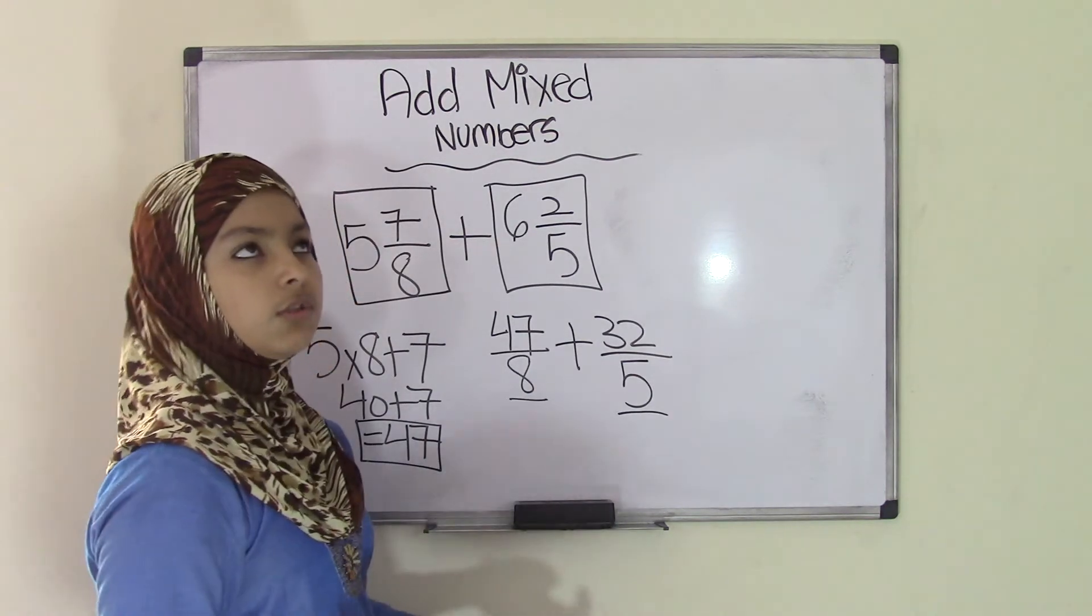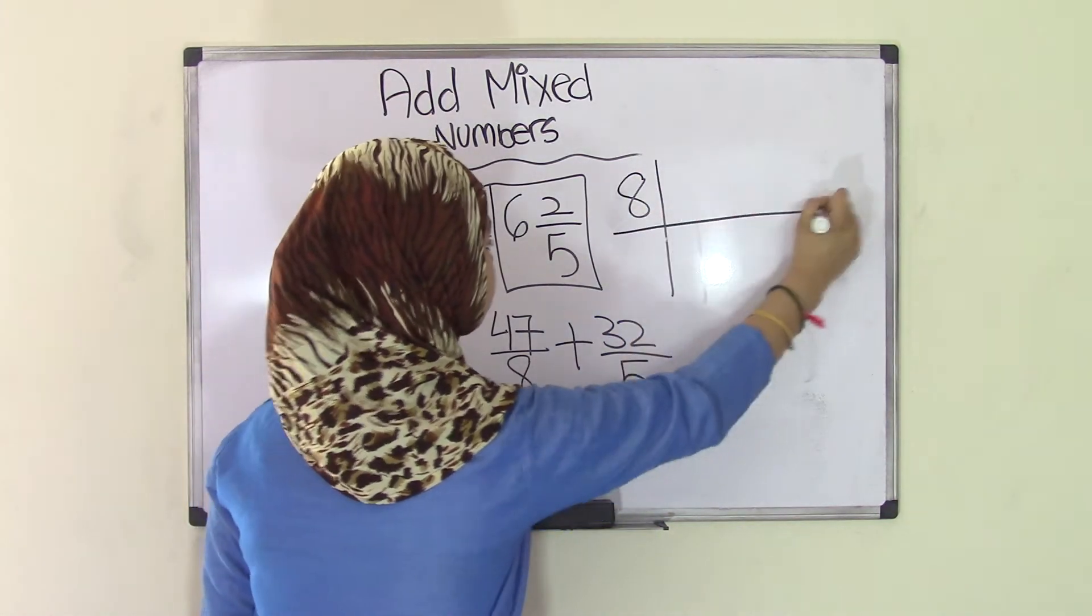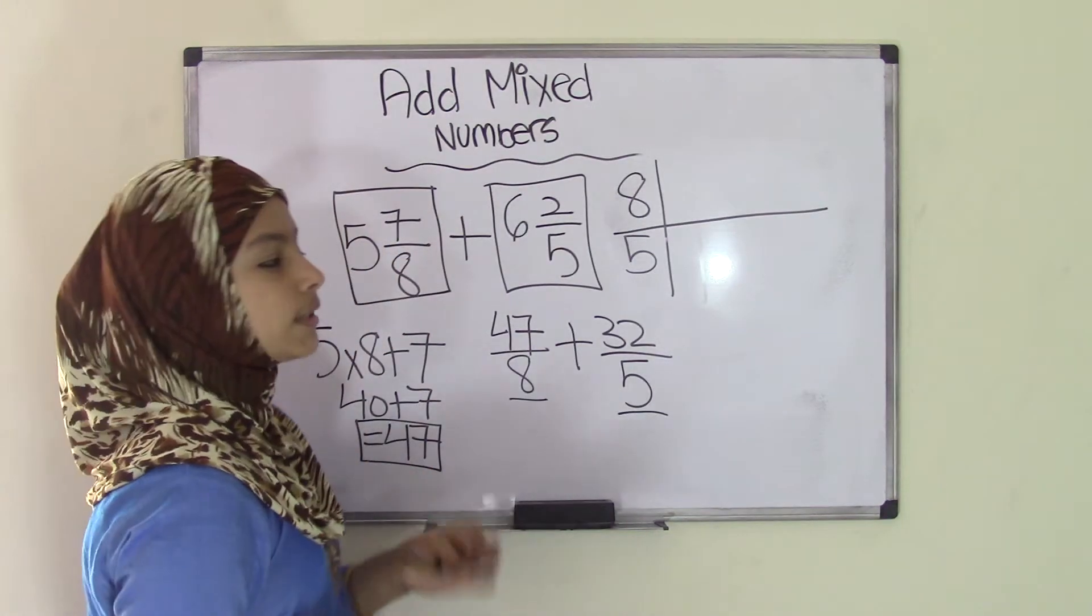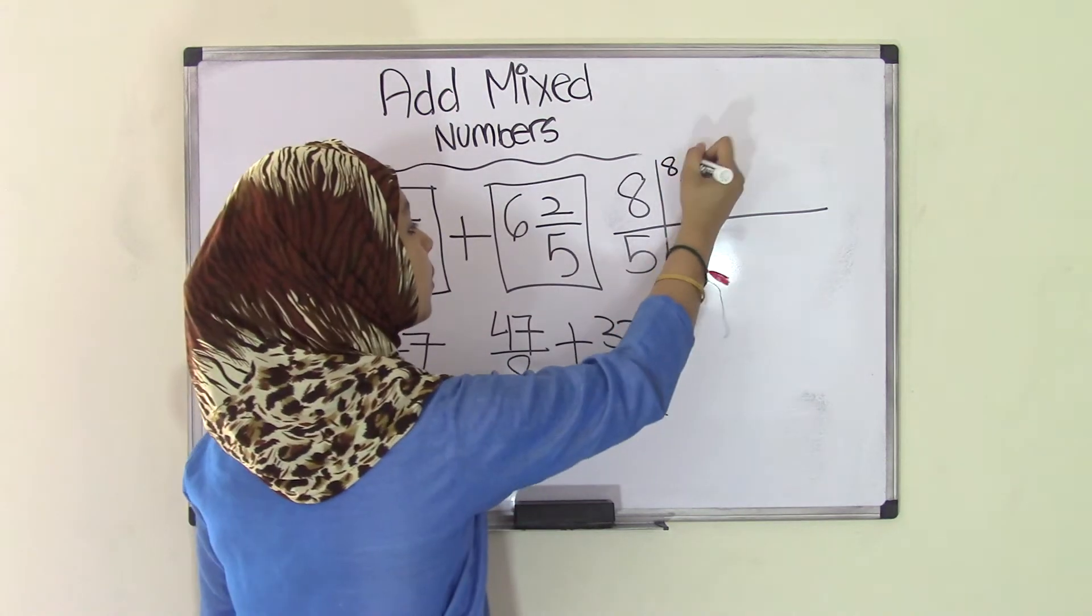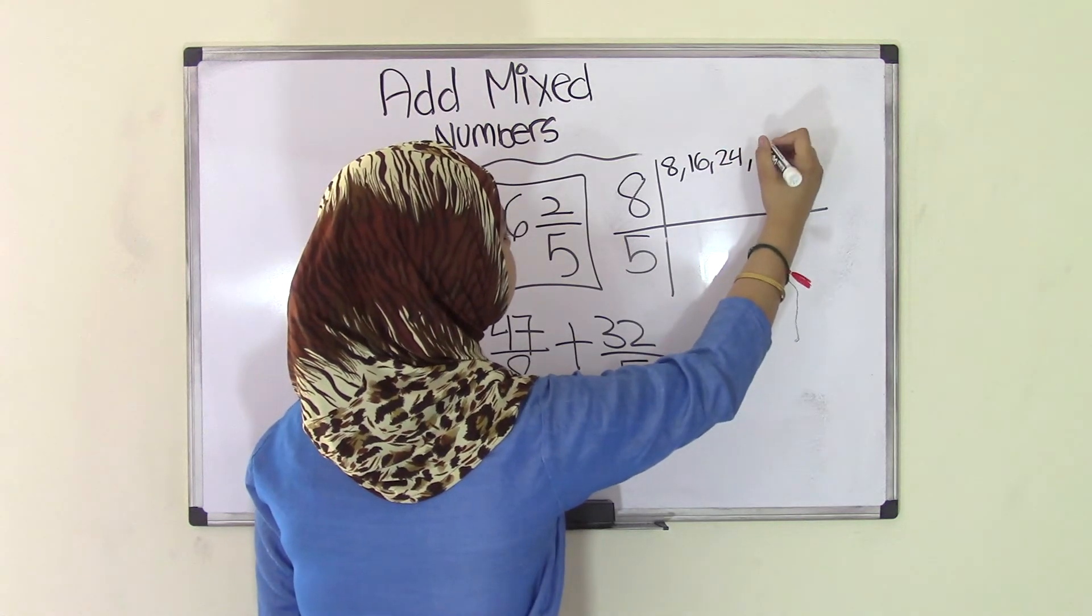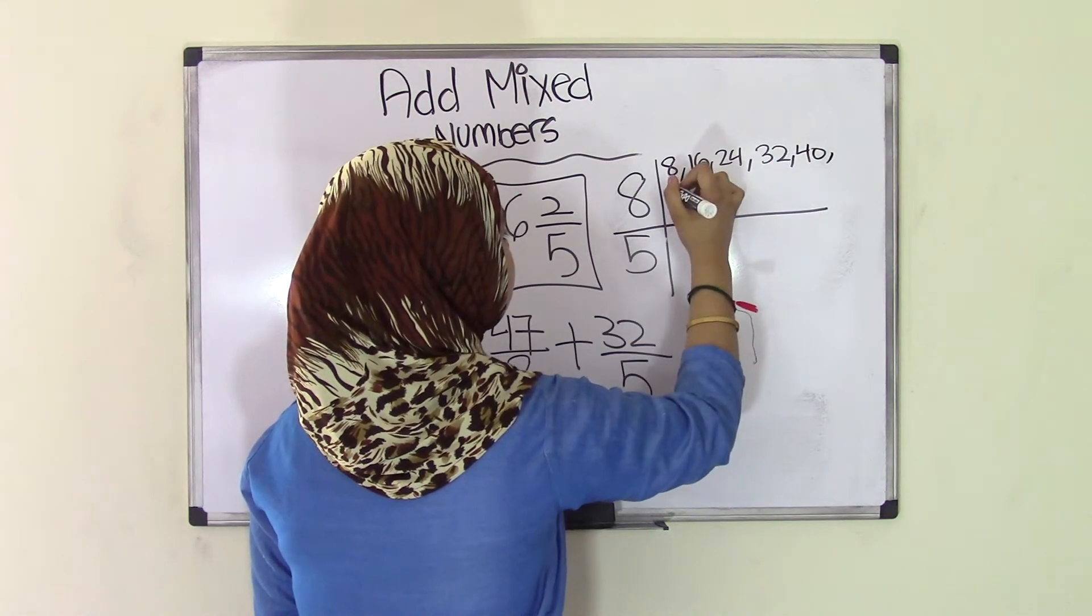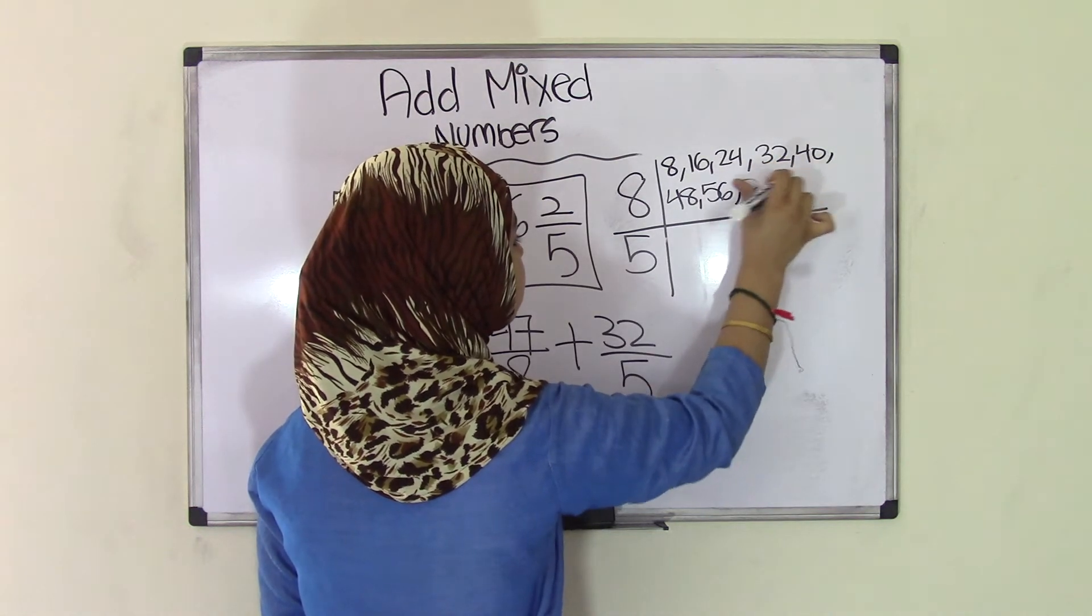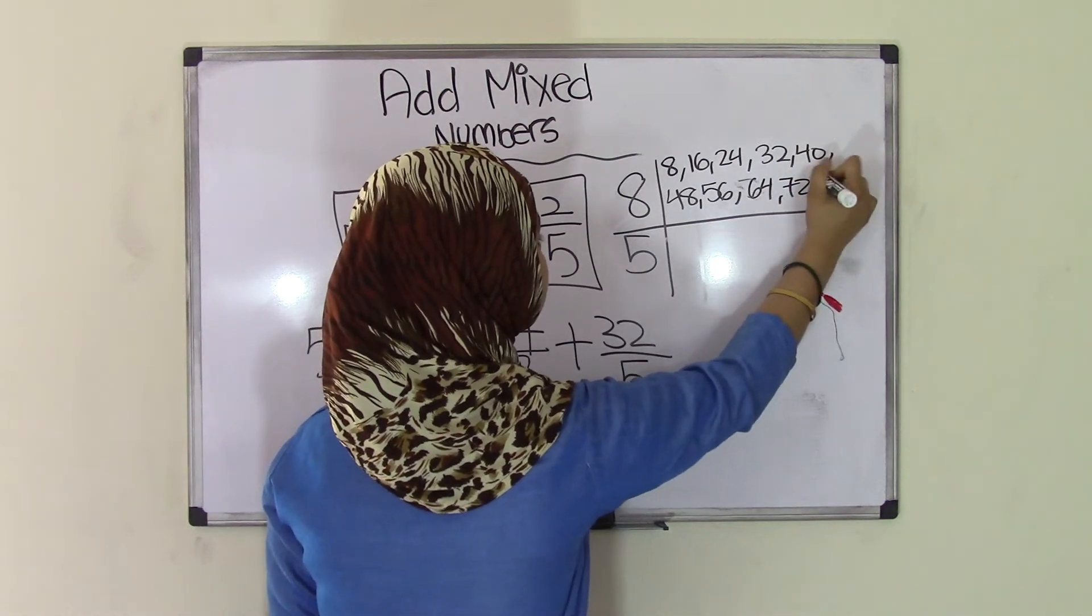In order to get common denominators, you need to find common multiples of each. So if you write 8 here, 5 here, you're going to list the first about 10 multiples of each of these. So 8 times 1 is 8, 8 times 2 is 16, times 3 is 24, times 4 is 32, times 5 is 40, times 6 is 48, times 7 is 56, times 8 is 64, times 9 is 72, and times 10 is 80.